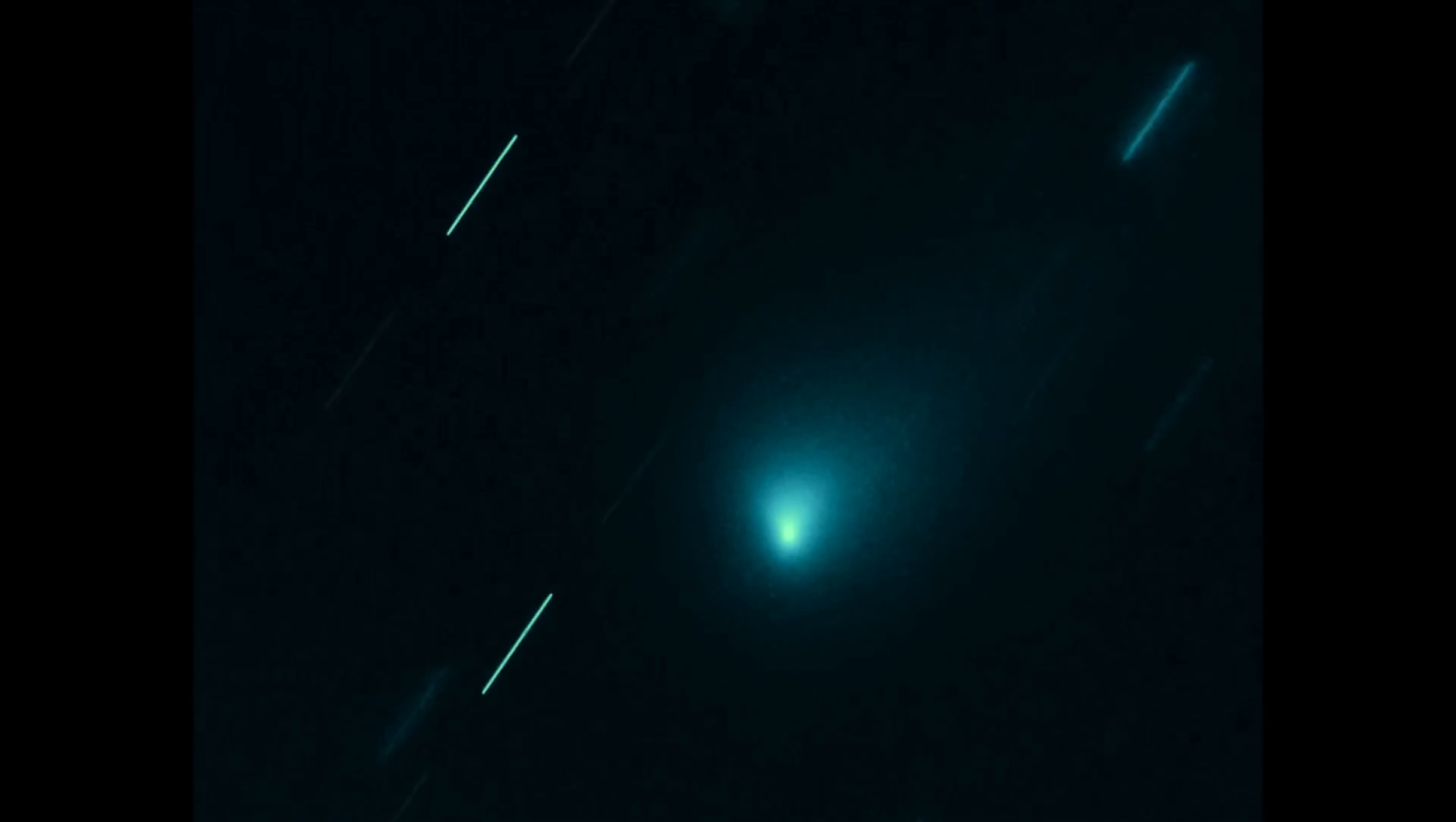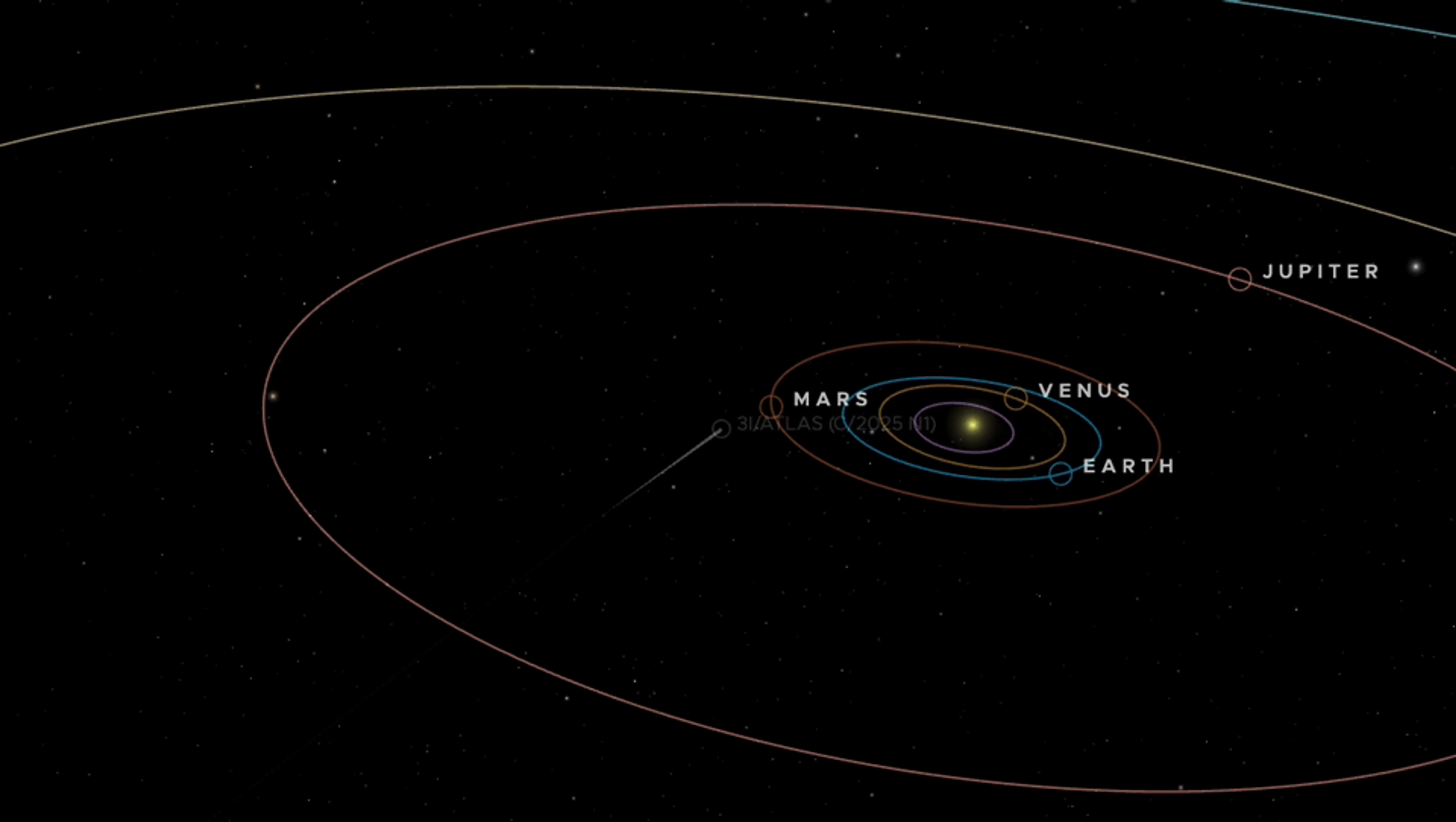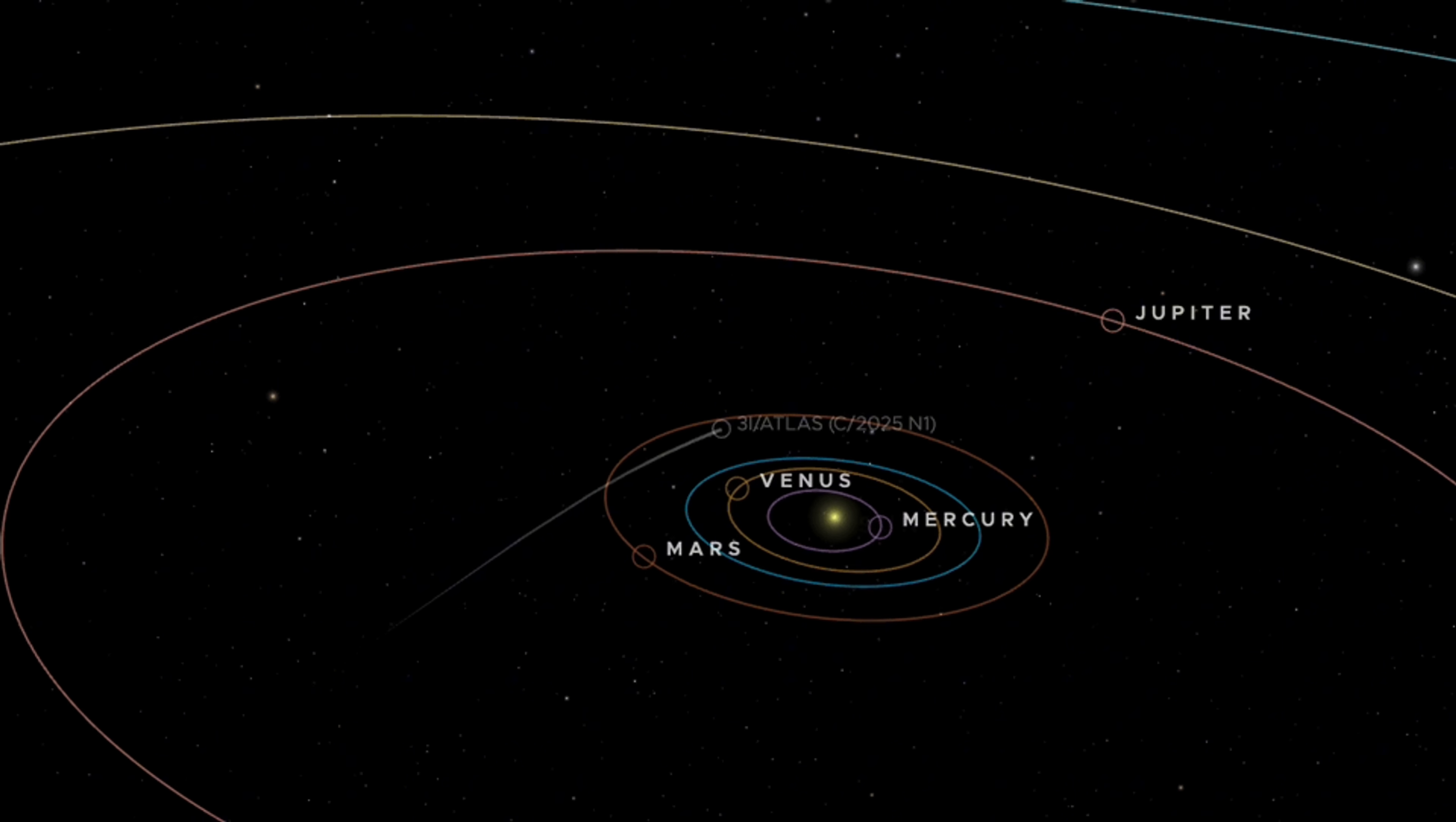As intriguing as the brightening is, the stronger evidence lies in the object's subsequent steadiness. Since the summer of 2025, 3i Atlas has maintained a remarkably consistent speed and trajectory, unaffected by the kind of non-gravitational acceleration that should accompany its very visible activity.